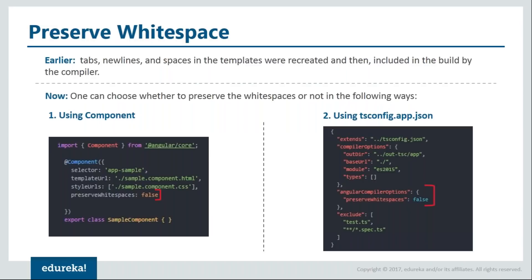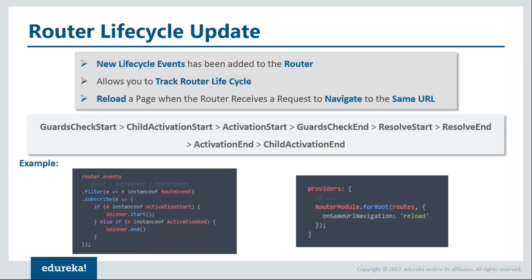Now let's talk about white spaces. Earlier, all tabs, new lines, and spaces in templates were recreated and included in the build by the compiler. In Angular 5, you can choose whether to preserve white spaces or not, which helps reduce bundle size. You can specify this in your component decorator using the preserveWhiteSpaces property, or in the tsconfig.app.json file for an application-wide setting. Component-level specification overrides the application-wide setting. Currently this property defaults to true, but in future the team might set it to false by default.